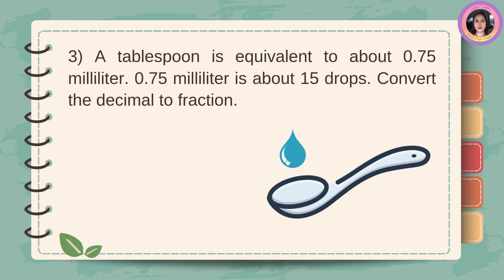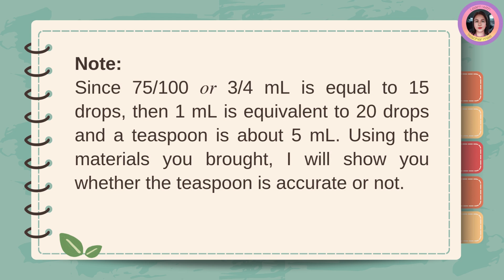A tablespoon is equivalent to about 75-hundredths milliliter. 75-hundredths milliliter is about 15 drops. Convert the decimal to fraction. 0.75 or 75-hundredths is equal to 75-hundredths. Since 75-hundredths or three-fourths milliliter is equal to 15 drops, then 1 milliliter is equivalent to 20 drops.